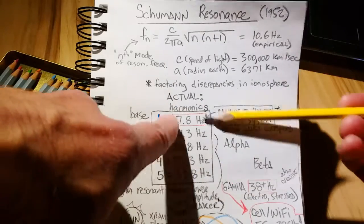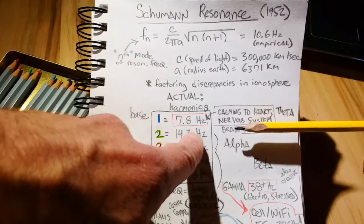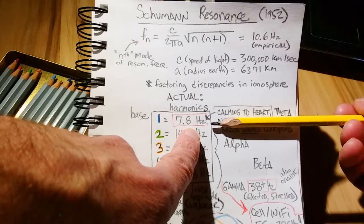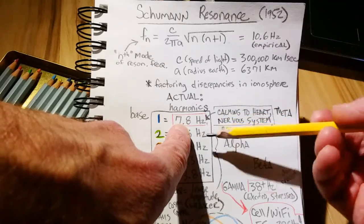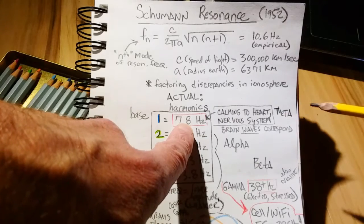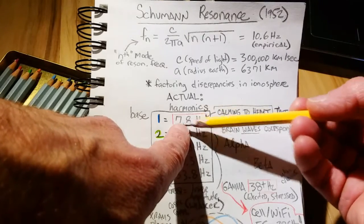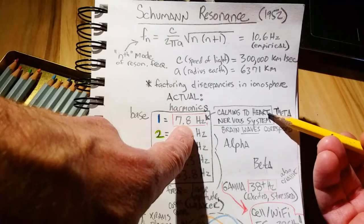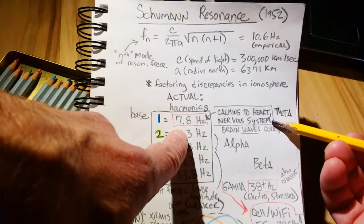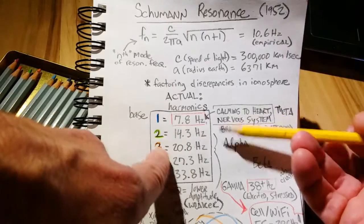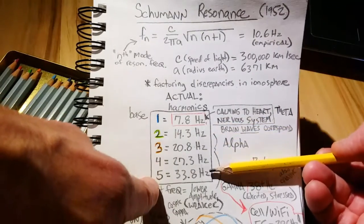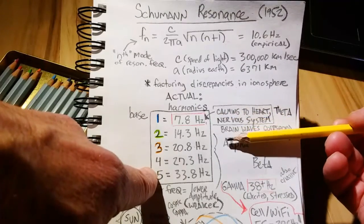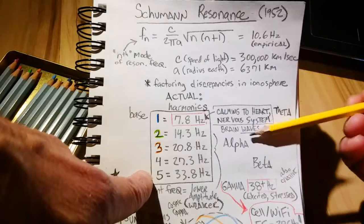Now, interestingly, these frequencies of planet Earth roughly correspond to our own brainwaves in delta with our deepest sleep, unconscious sleep. That's well below 7.8, actually. But as far as our brainwaves go, generally sleeping is a theta stage, which roughly corresponds to 7.8. 7.8 is proven to be very calming to our heart muscle, as well as the sympathetic nervous system. And going through these other harmonics in the Earth's resonant frequencies generally correspond to alpha and beta brainwaves of our waking hours.